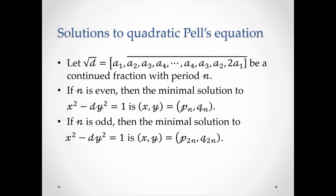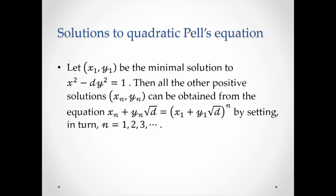We are now ready to solve the quadratic Pell's equation. By using the properties of the convergents and the periodic representation of the square root of d, we arrive at this theorem. Therefore, we are able to find the minimal solution to the quadratic Pell's equation by finding the continued fraction of the square root of d. Furthermore, by using this equation, we are able to find all the other positive solutions.